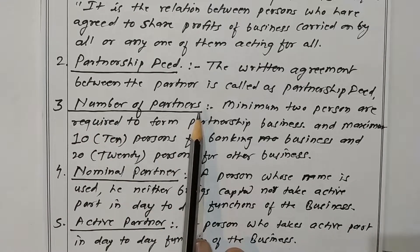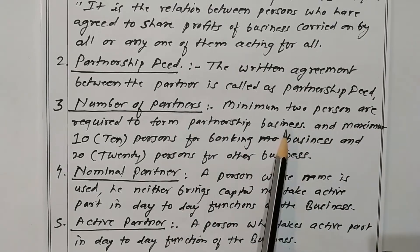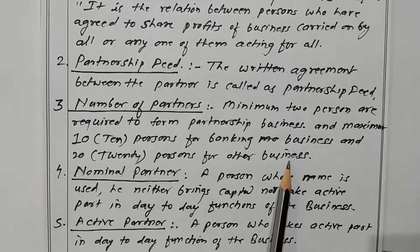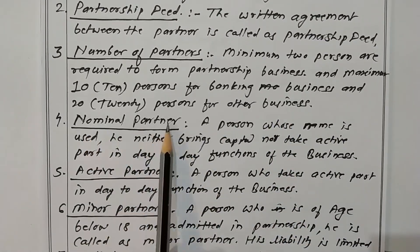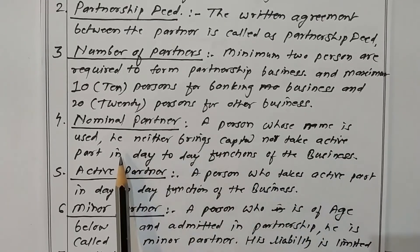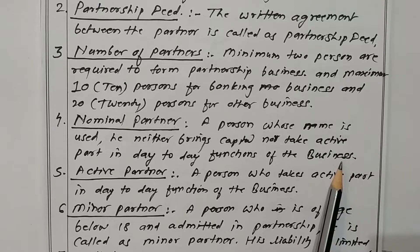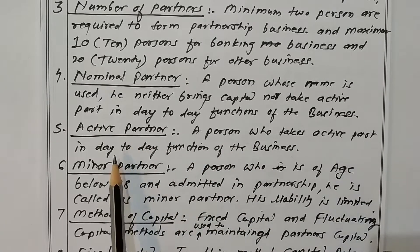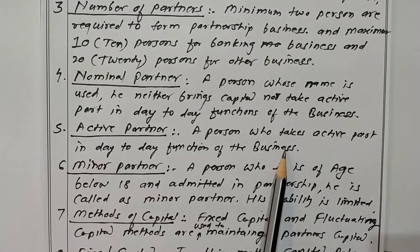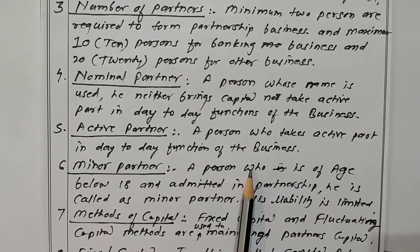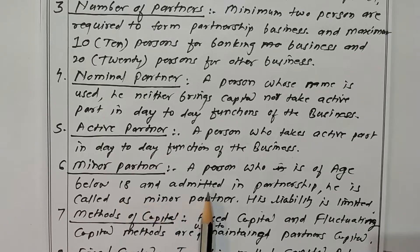What are the number of partners? A minimum of two persons are required to form a partnership business, and a maximum of 10 persons for banking business and 20 for other businesses. A nominal partner is a person whose name is used but who neither brings capital nor takes an active part in day-to-day functions of the business. A person who takes an active part in day-to-day functions is called an active partner. A person below the age of 18 admitted into a partnership firm is called a minor partner, and his liability is limited.